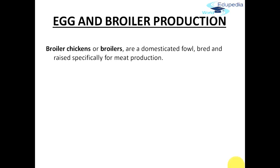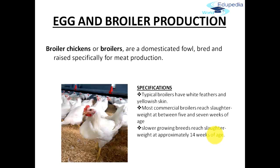Let's now talk about egg and broiler production. Broiler chickens are a domesticated fowl bred and raised specifically for meat production. The specifications of broiler chicken are: they typically have white feathers and yellowish skin. Most commonly, broilers reach slaughter weight between five to seven weeks of age, while slower-growing breeds reach slaughter weight at approximately 14 weeks of age.